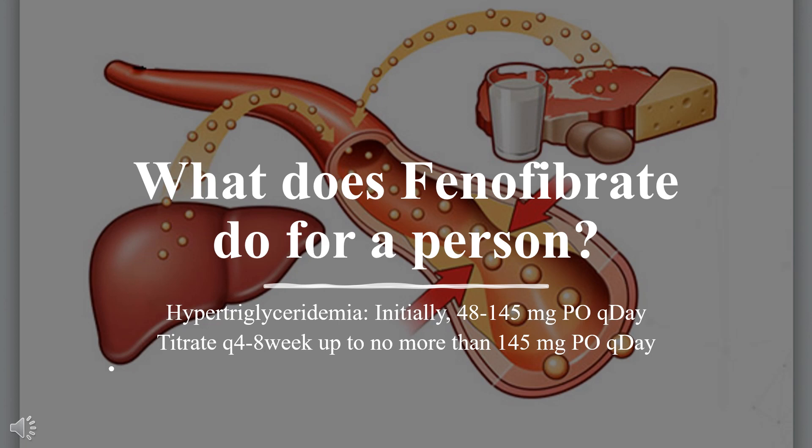Triglide dosing: For hypercholesterolemia and mixed dyslipidemia, the initial dose is 160 mg orally once daily. For hypertriglyceridemia, 50 to 160 mg orally once daily. Lipofen dosing: For hypercholesterolemia and mixed dyslipidemia, the initial dose is 150 mg orally once daily. For hypertriglyceridemia, 50 to 150 mg orally once daily.